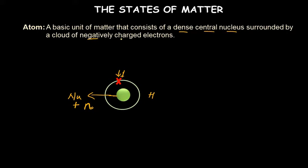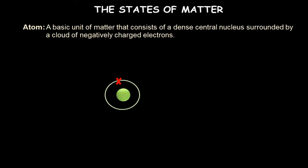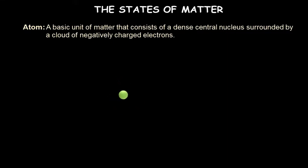Surrounding the nucleus we have different shells carrying the electrons. I have shown only one shell, but there are many such shells which can carry many more electrons, and so we call it the negatively charged cloud of electrons. In this video, many times we will call atoms or molecules as particles, so we may not draw the nucleus and electron shell every time — we can just consider them as particles.